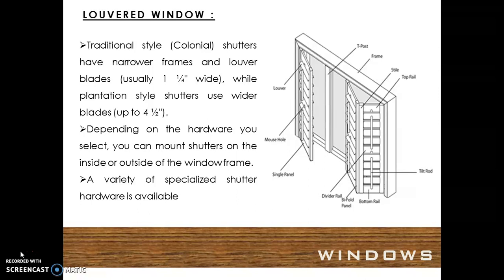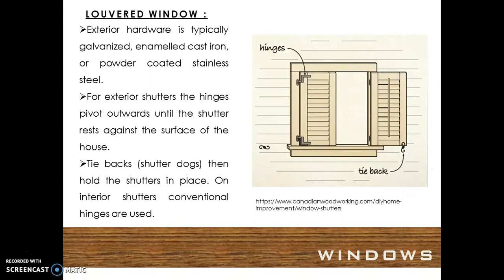Depending on the hardware you select, you can mount shutters on the inside or outside of the window frame. A variety of specialized shutter hardware is available. Exterior hardware is typically galvanized, enameled cast iron, or powder coated stainless steel. For exterior shutters, the hinges pivot outwards until the shutter rests against the surface of the house. The tie backs or shutter docks then hold the shutters in place. On interior shutters, conventional hinges are used.